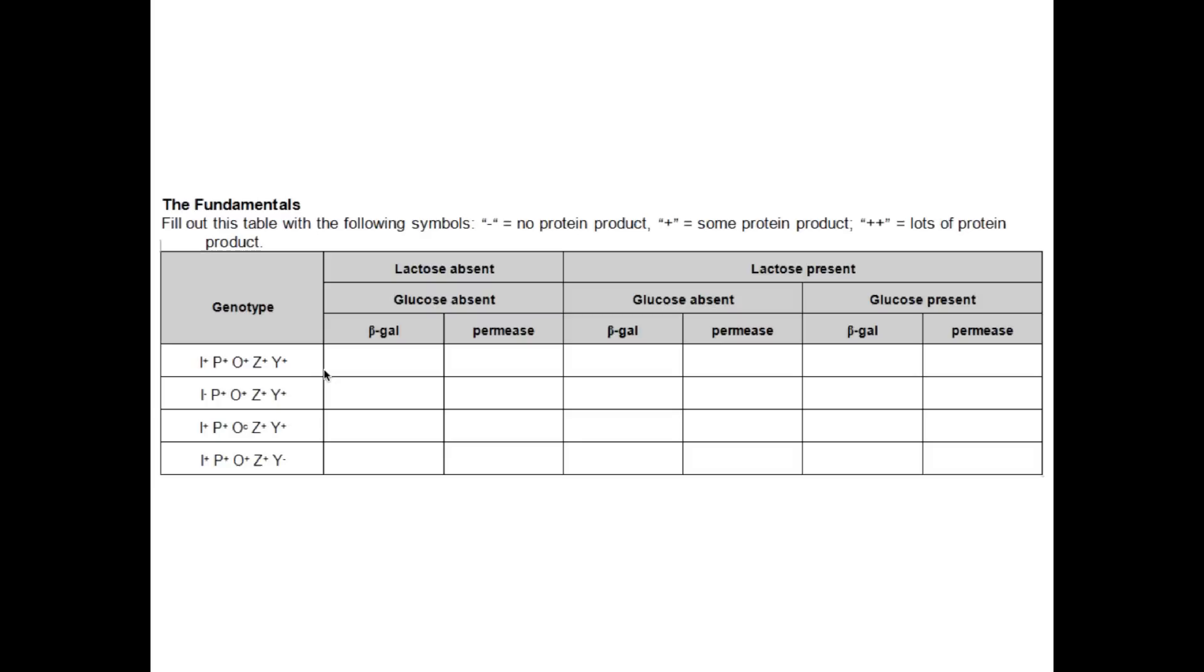Okay, so the first example is this. We've got an operon here that's quite normal. I've got different kinds of media that we're going to grow these bacteria in. One media doesn't have any lactose or glucose. One has lactose but no glucose and one has lactose and has glucose. And these columns represent the different gene products that I want you to assess for. Beta galactosidase is the protein that comes from the lac Z locus right there. And the lac Y is for permease which is a protein that allows the lactose to come inside.